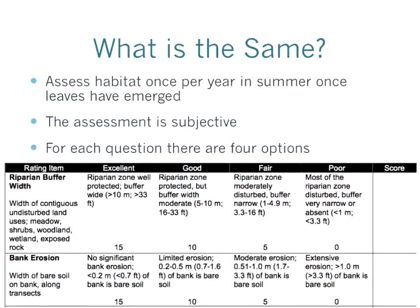Let me go through what is the same between the old and new habitat assessment, then what's different. What is the same: habitat will still be assessed one time per year once the vegetation is out and full — June, July, August are great times. Just like before, one time per year. And the assessment, like before, is subjective. You see four options for each question, and the more diverse or better the habitat, the higher the score you get for that particular question.